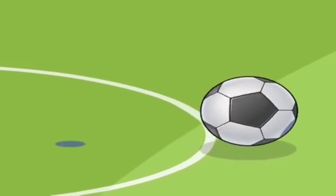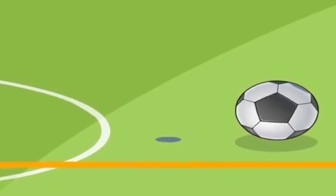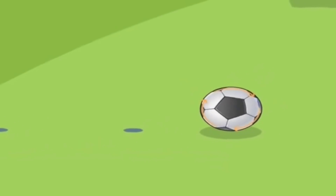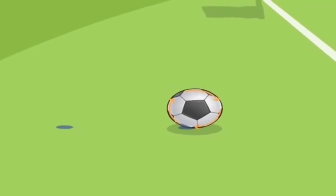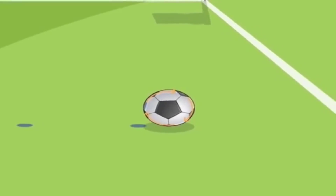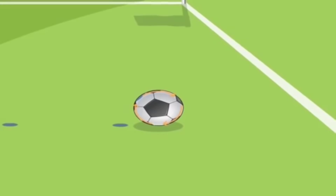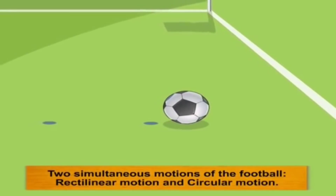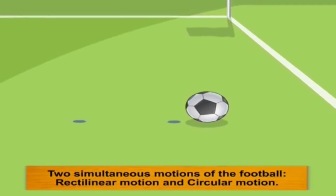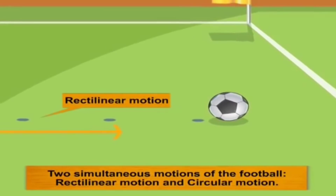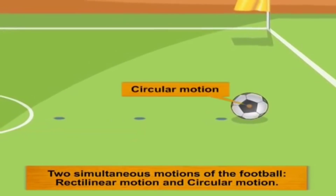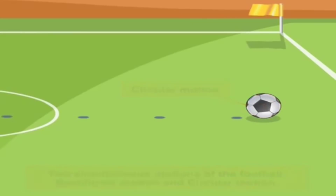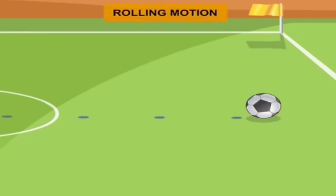The ink dot marked on the football moves ahead along a straight path. We see that while the football rolls on the surface, the point also moves along a circular motion. The football moves ahead with two motions happening simultaneously — rectilinear and circular motion. Such a motion is called rolling motion.